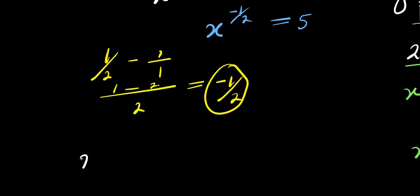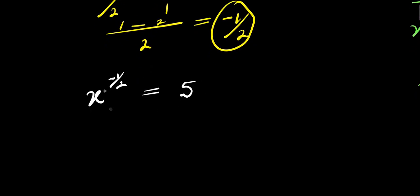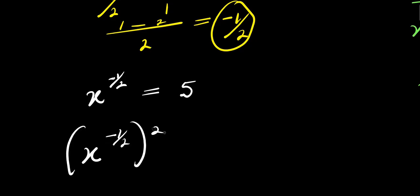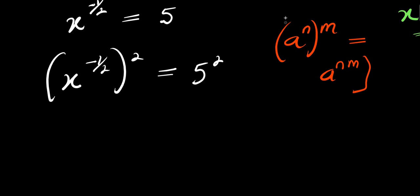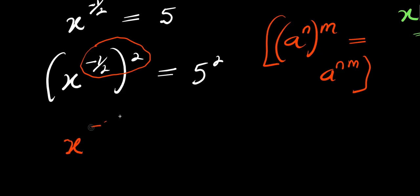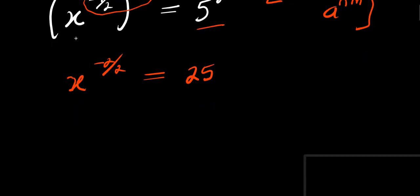So we have x to the power of negative 1/2 equals 5. To solve this, we raise each part of the equation to the power of 2: x^(negative 1/2) raised to the power of 2 equals 5 squared. Multiplying the exponents, we get x to the power of negative 2/2, which simplifies to x to the power of negative 1, and this equals 25.